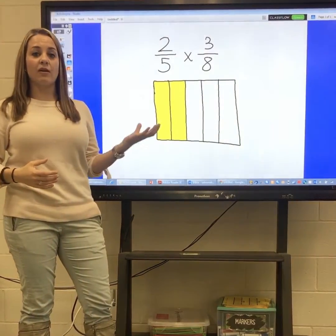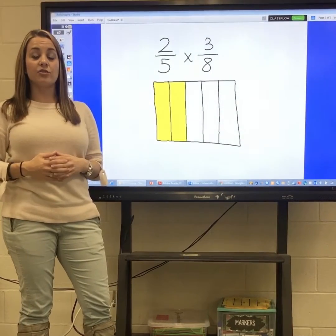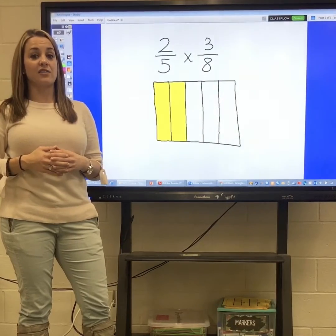From here, this is the amount of the fraction that we do have, and we have to find 3 eighths of this amount. To do that, I'm going to create 8 rows so that I can find 3 of those rows.